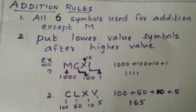For example, MCXI: the value of M is 1000, C is 100, X is 10, and I is 1. The lower value symbols come after the higher value symbols, so the value is 1111.